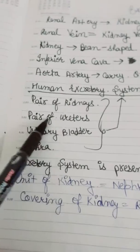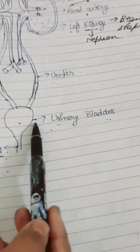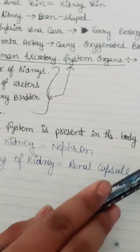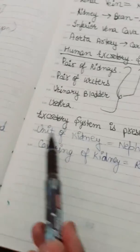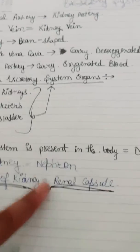A pair of ureters connect both kidneys to the urinary bladder. The urinary bladder is a balloon-like structure, and the urethra is the ending part of the excretory system. The excretory system is located in the dorsal abdomen, the basic unit of the kidney is the nephron, and the covering of the kidney is called the renal capsule.